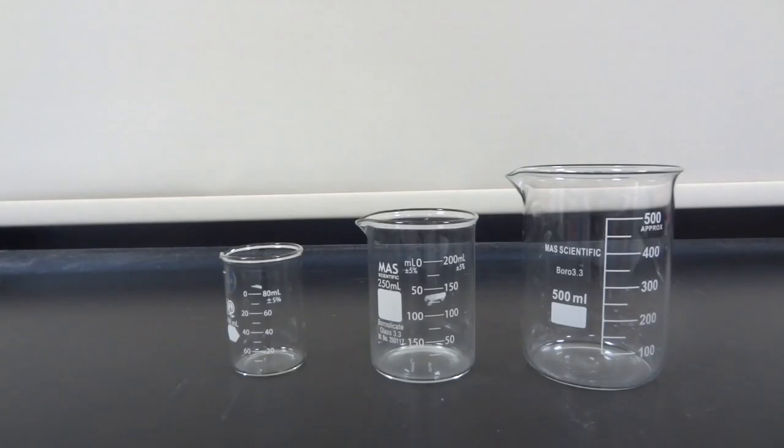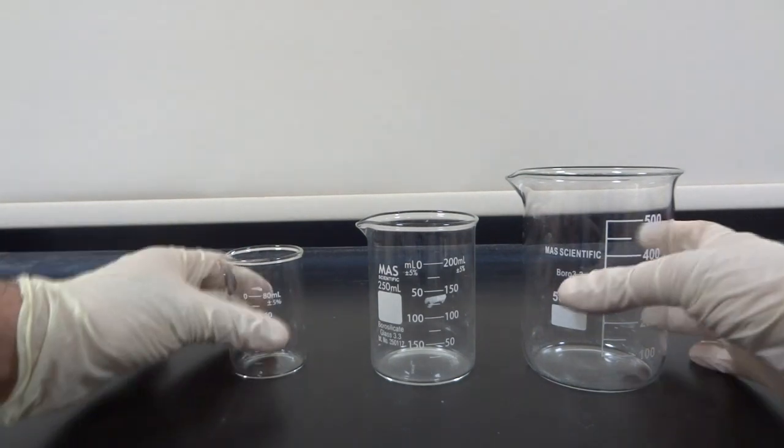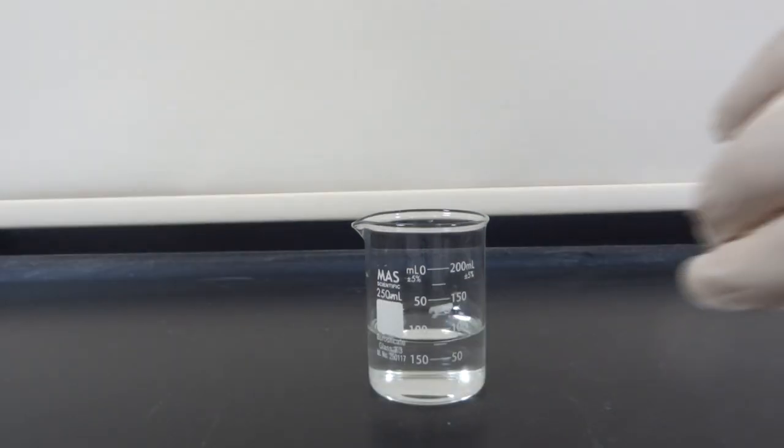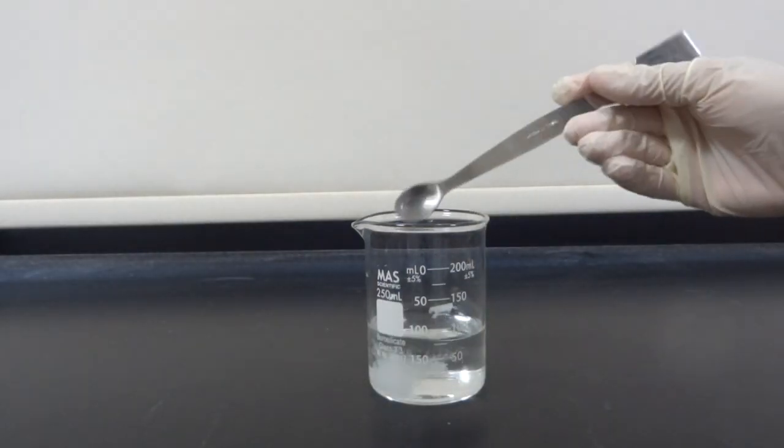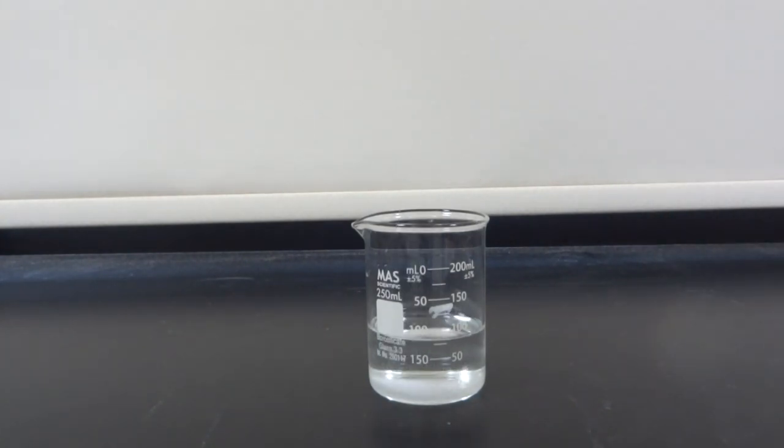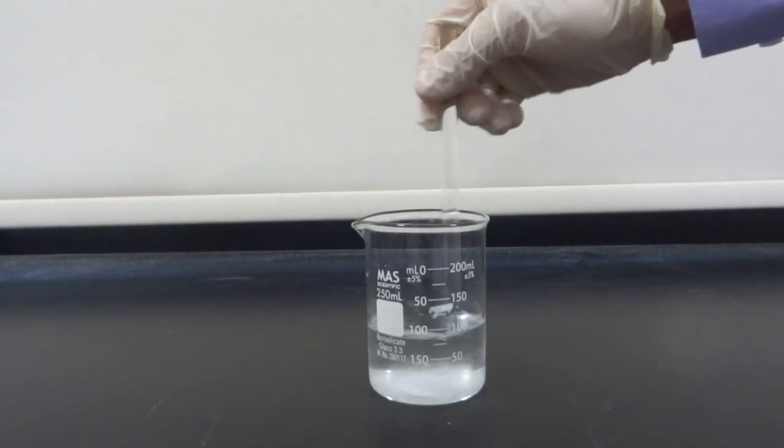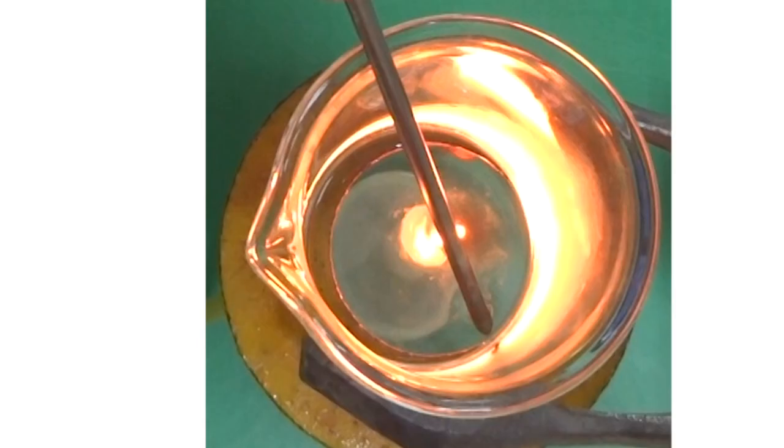A beaker is a container used for holding various liquids. It's useful for mixing chemicals. Some of them are heat resistant, so they are used to heat liquids. In this example, the scientist mixed sugar and water, stirred them by using a glass rod, and heated the mixture.